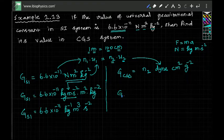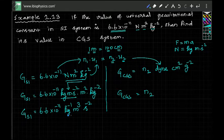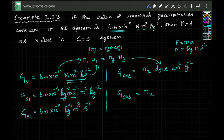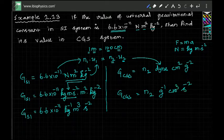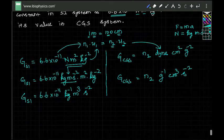The gravitational constant value in the CGS system has an unknown number N2. In place of Newton we use dyne = gram·cm/s². So the CGS units become gram⁻¹·cm³·s⁻², which matches the SI form of kg⁻¹·m³·s⁻². Now we apply N1·U1 = N2·U2.